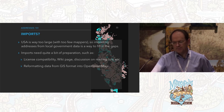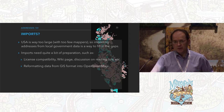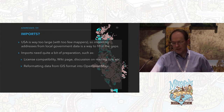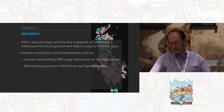So what do you do at that point? Imports. Imports are ugly and difficult. The USA is way too large — there aren't enough mappers to do it all by pedaling up and down every street. So imports from local government data, local county data, or state data is really the way to go. They need a lot of preparation. The soft part is license compatibility — you have to have a wiki page and discussion on the mailing list. The hard part is reformatting all that data from their GIS format into OpenStreetMap format.